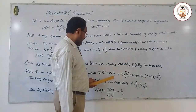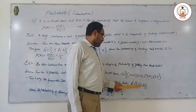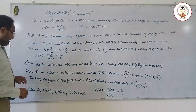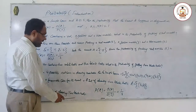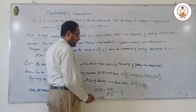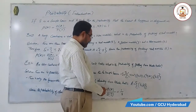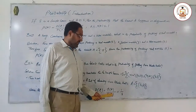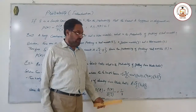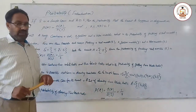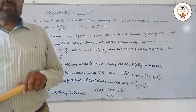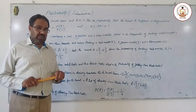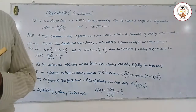We are interested in the event that both balls are black. Event A equals both balls are black. The probability equals the number of elements in event A divided by the number of elements in the sample space, which is 1 upon 4. So the probability of getting 2 black balls is 1/4. This is my third lecture about probability — I hope you understand. OK, next time, Allah Hafiz.